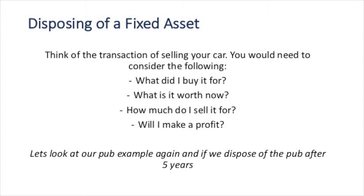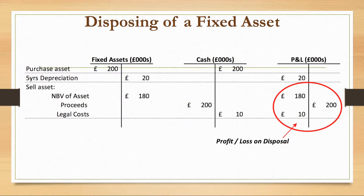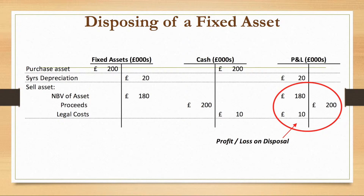Using the pub example, here are the different stages. Stage one: you purchase your asset — there's an outflow of cash and you're getting your fixed asset, so you debit your asset account. Five years of depreciation reduces your asset balance, so you credit your asset and debit your P&L as a cost. When you sell the asset, the net book value is now 180 — that's your 200 minus your depreciation — so that's what the asset is sitting on your books at.